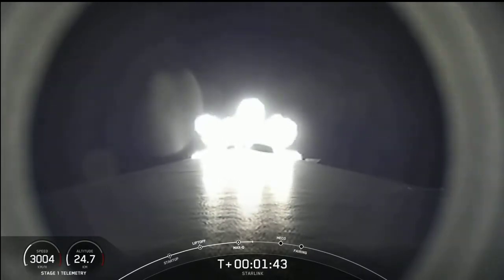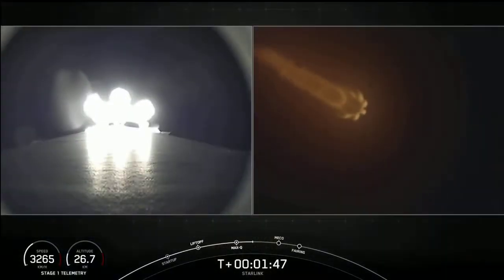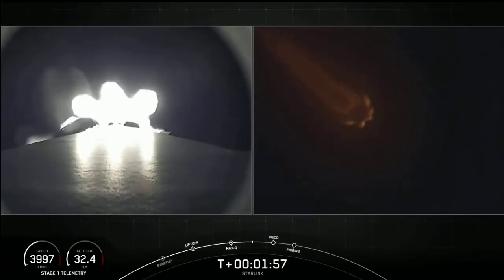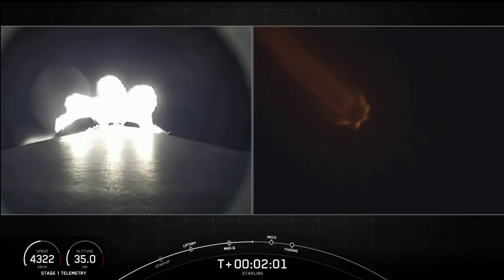The second event is stage separation. This is where the first and second stage will separate from one another, with the first stage making its way back to Earth for a landing attempt while the second stage continues its journey with the third event, second engine start one, also known as SES-1. This is where the single Merlin vacuum engine on the second stage will light up and propel the second stage along with the Starlink satellites into orbit.